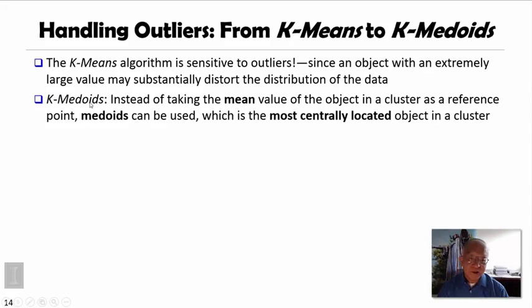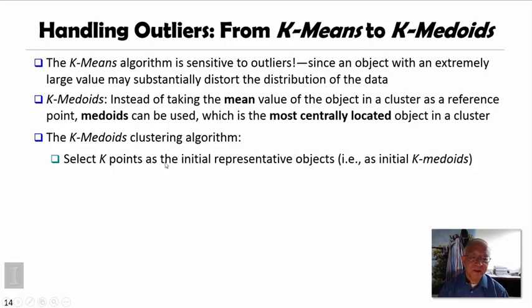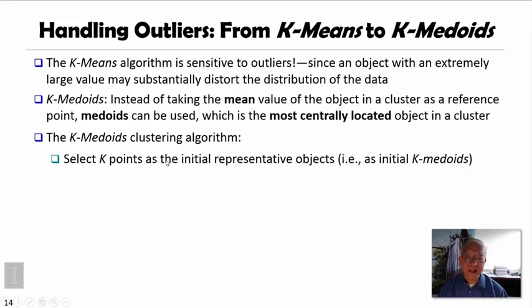So what is k-medoids? Instead of taking the mean value of objects in the cluster as our centroid, we actually use the most centrally located object in the cluster, which we call a medoid. The k-medoids clustering algorithm first selects k points as initial representative objects — that is, initial k-medoids. The difference from k-means is that k-means can select k virtual centroids, but k-medoids must select k representative real objects.